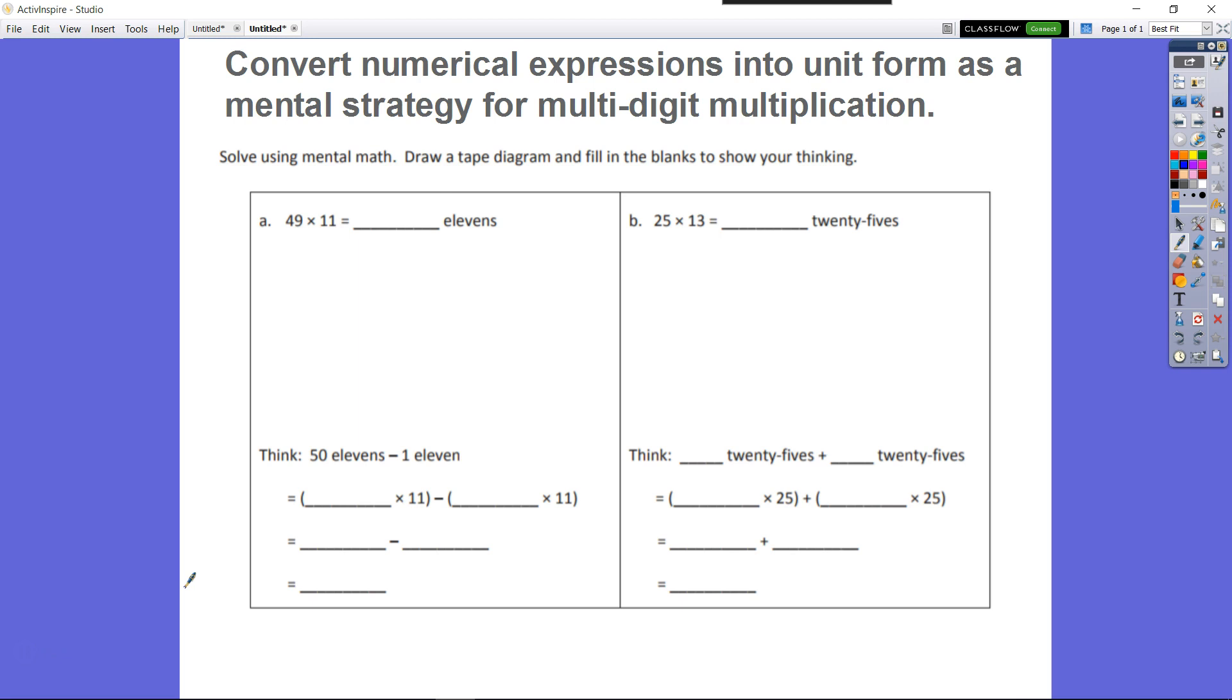So we have A, that's 49 times 11 is equal to blank elevenths. And we should know just from reading our expression that our answer's 49 elevenths. We're going to go ahead and fill in the blanks at the bottom before we draw our tape diagram.